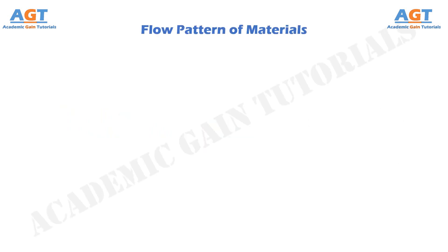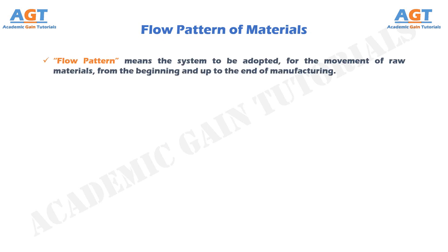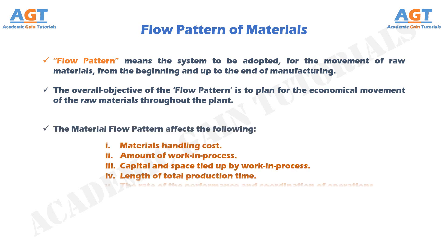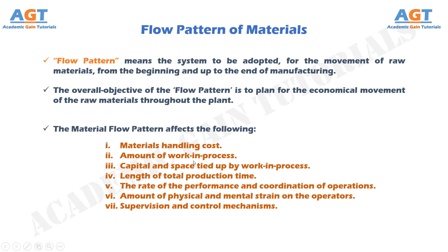Flow pattern of materials. Flow pattern means the system to be adopted, or the system used, for the movement of raw materials from the beginning up to the end of manufacturing. The overall objective of the flow pattern is to plan for the economical movement of raw materials throughout the plant. The flow pattern affects the materials handling cost, the amount of work in process, the capital and space tied up by work in process, the length of total production time, the rate of performance and coordination of operations, the amount of physical and mental strain on the operators, and the supervision and control mechanisms.